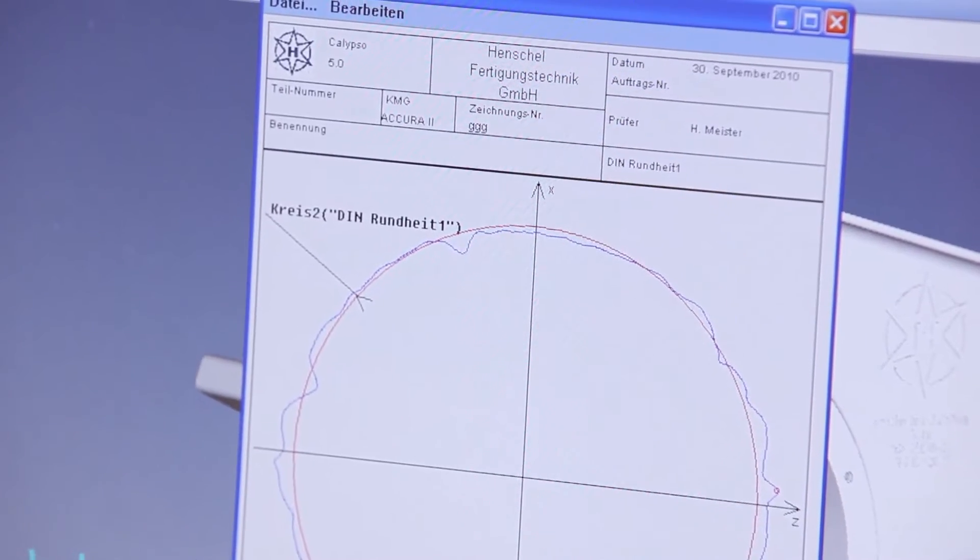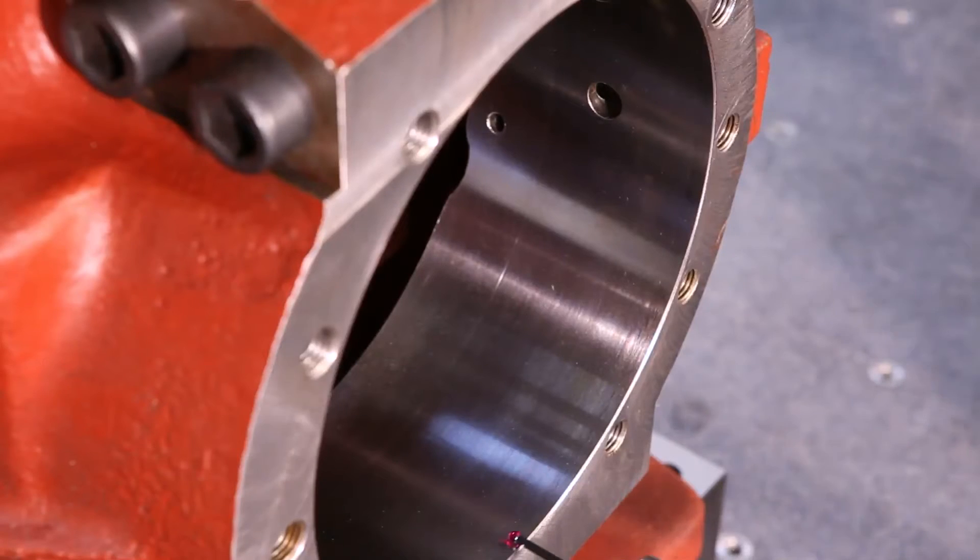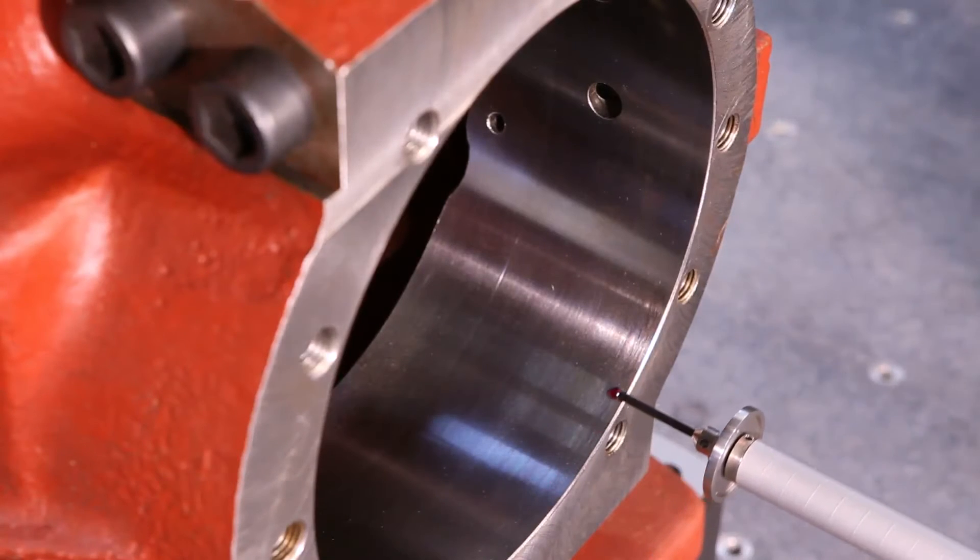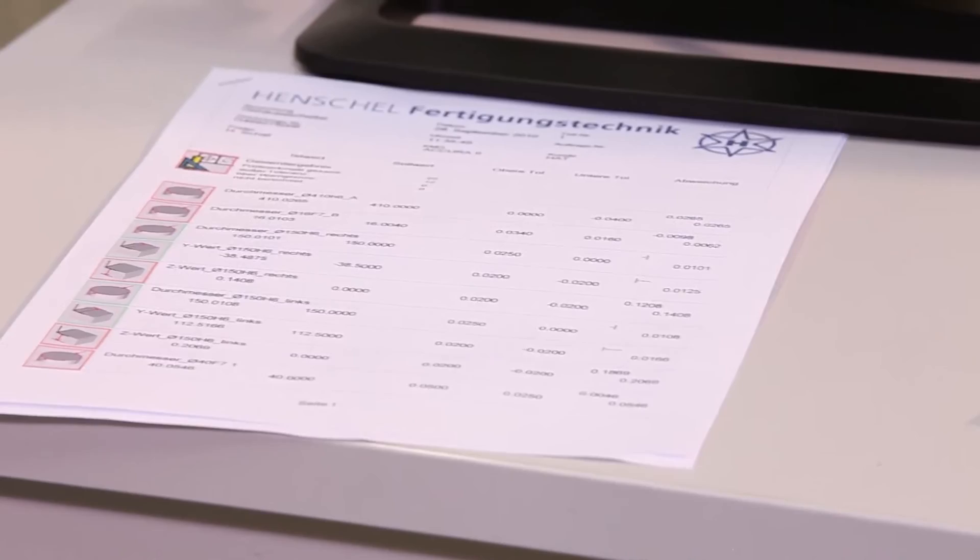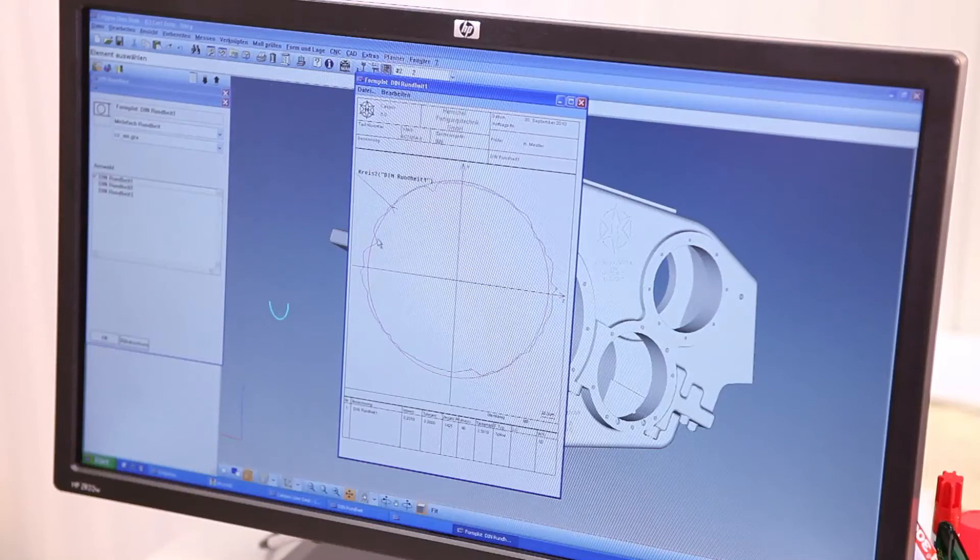The measuring results of both intermediate tests on the casings are used to control and coordinate the mechanical processing. When the casings are finished, a measurement report is created which documents for us and for our customers whether deviations were found and to what extent.